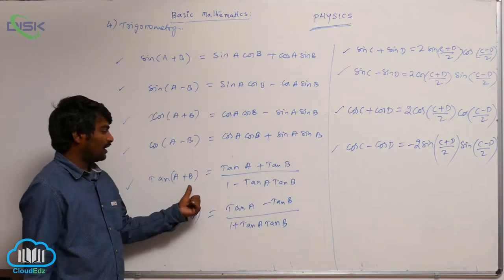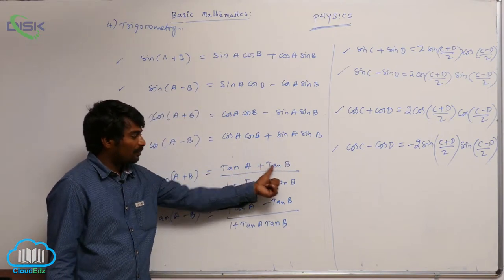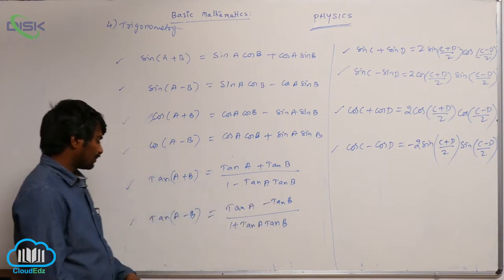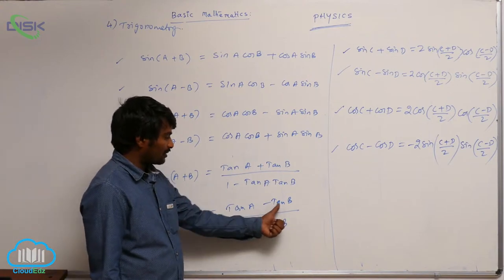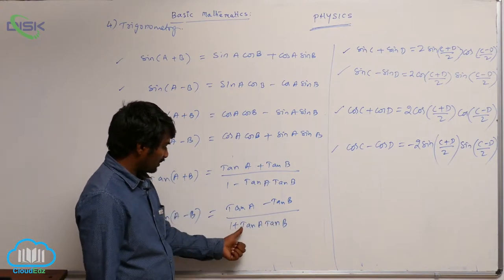tan(a + b) = (tan a + tan b) / (1 - tan a tan b). tan(a - b) = (tan a - tan b) / (1 + tan a tan b).